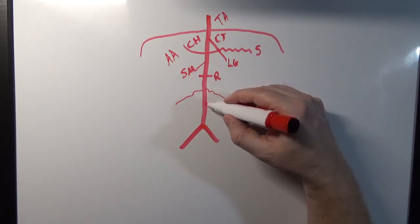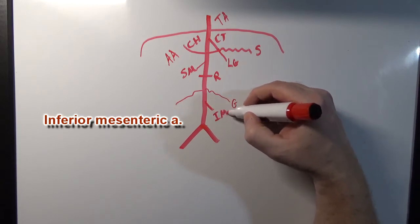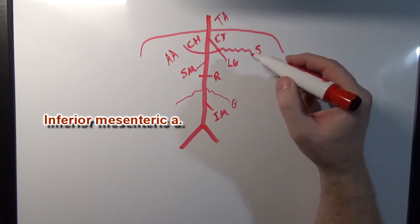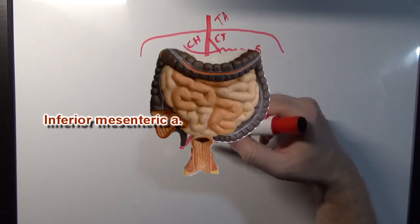The next branch down is going to be the inferior mesenteric artery, and this inferior mesenteric artery is going to supply the rest of the large intestine.